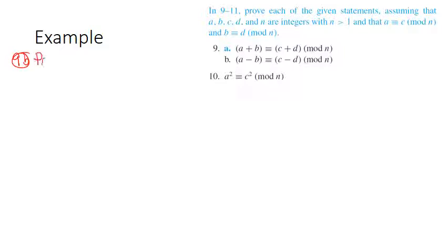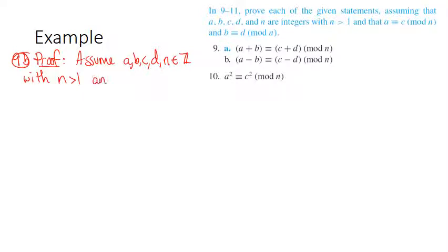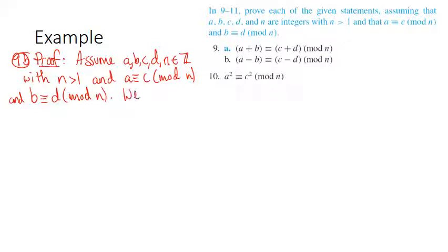So we're assuming a, b, c, d, and n are integers with n greater than 1, that a is congruent to c mod n, and that b is congruent to d mod n. We will show that a minus b is congruent to c minus d mod n.